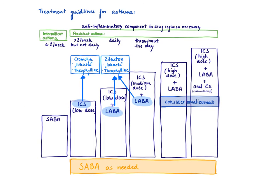Let's finish with the treatment guidelines for asthma. We use a stepwise approach based on severity. We distinguish between intermittent and persistent asthma. Intermittent asthma is defined as fewer than twice a week symptoms. Persistent asthma continues with mild — more than twice a week but not daily — moderate, with daily symptoms but not throughout the day, and severe, with symptoms throughout the day. There are also step 5 and step 6, which represent asthma more severe than the severe persistent category.